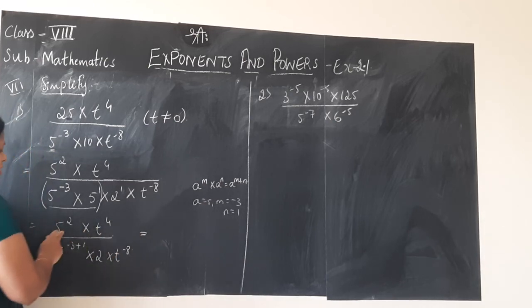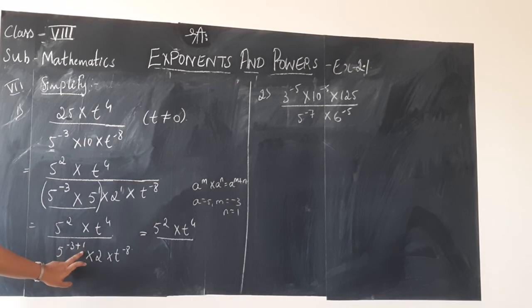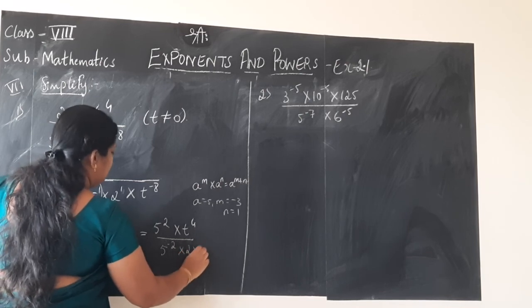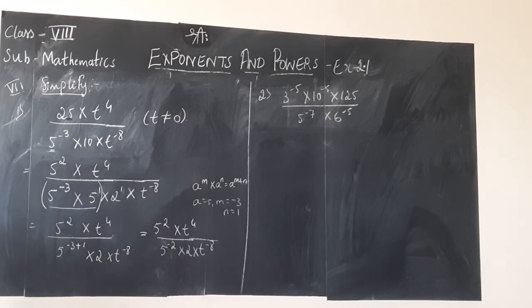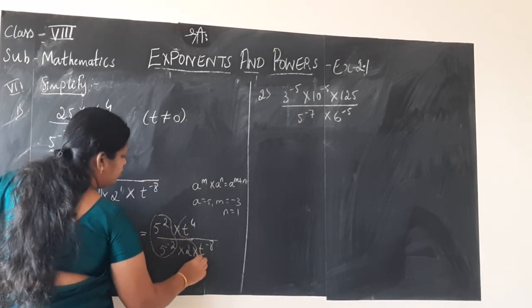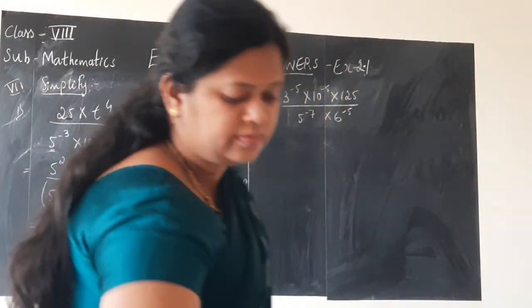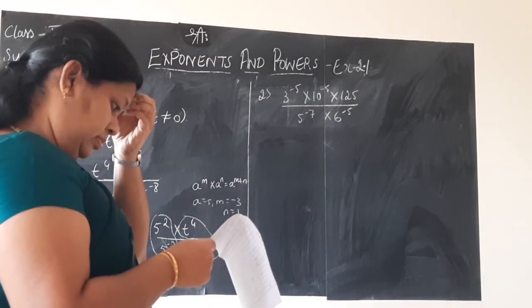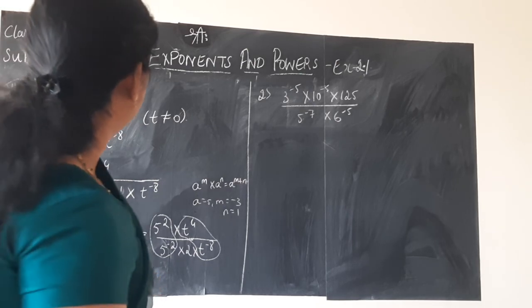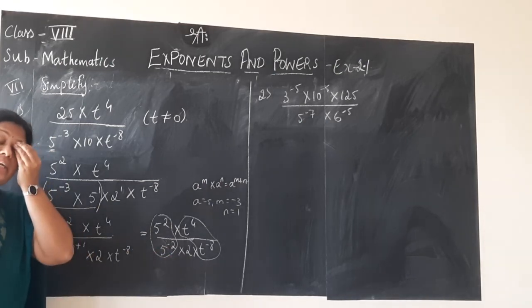This will be equal to: numerator 5 to the power 2 into t to the power 4 as it is. 5 to the power minus 3 plus 1 gives minus 2 — so 5 to the power minus 2, into 2 as it is, into t to the power minus 8 as it is. Now if you group: 5 square and 5 power minus 2 together, t power 4 and t power minus 8 together, and 2 remains in the denominator as it is.